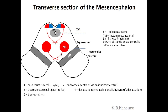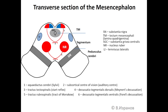From nucleus ruber originates number five, tractus rubrospinalis, the main tract of the extrapyramidal system. Number six is decussatio tegmentalis ventralis, or Forel's decussation. In the tegmentum there are two loops: LL, lemniscus lateralis, which is responsible for auditory information, and LM, lemniscus medialis, which is responsible for skin sensation and proprioceptive information.